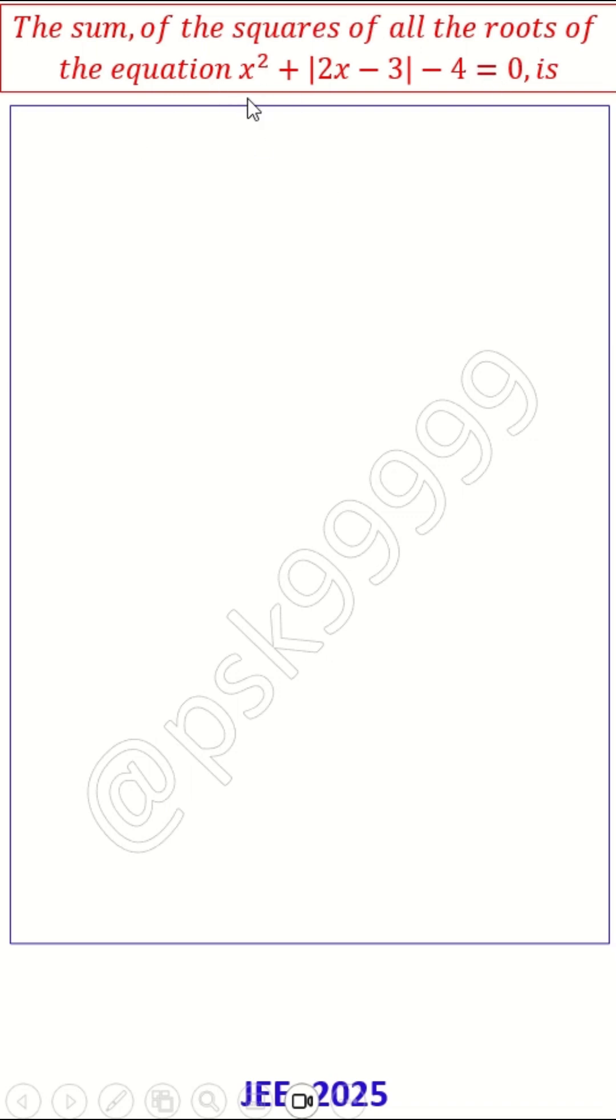The sum of the squares of all roots of the equation x² + |2x - 3| - 4 = 0.